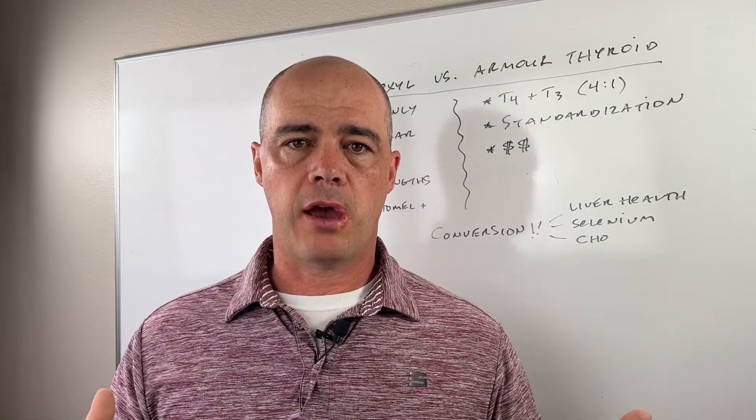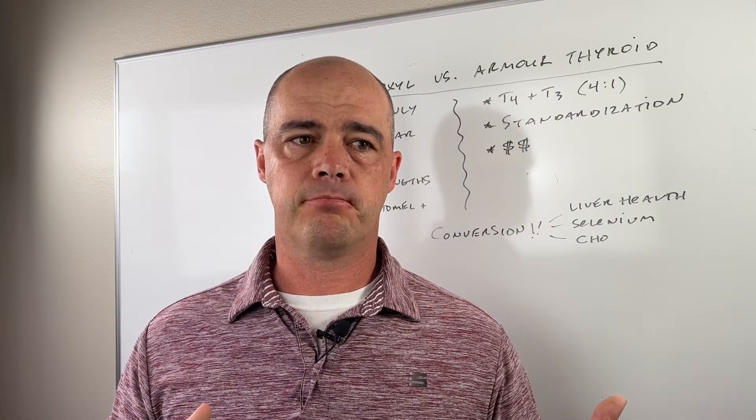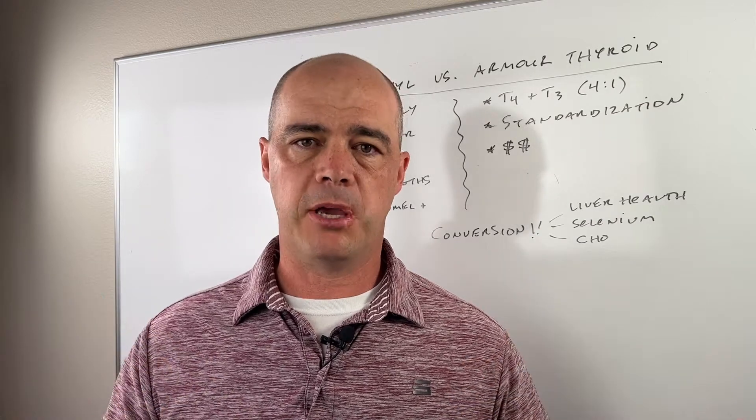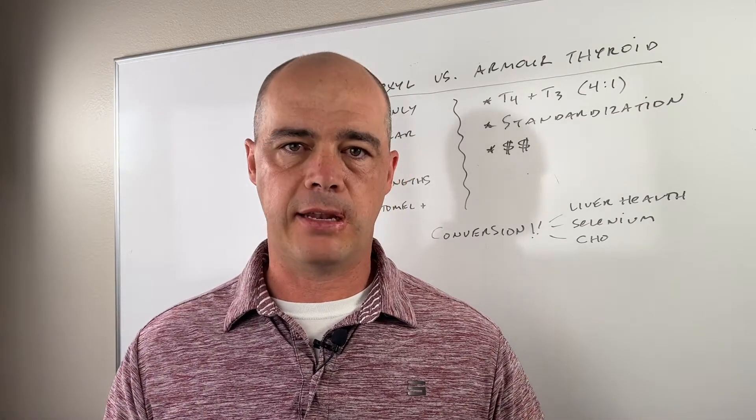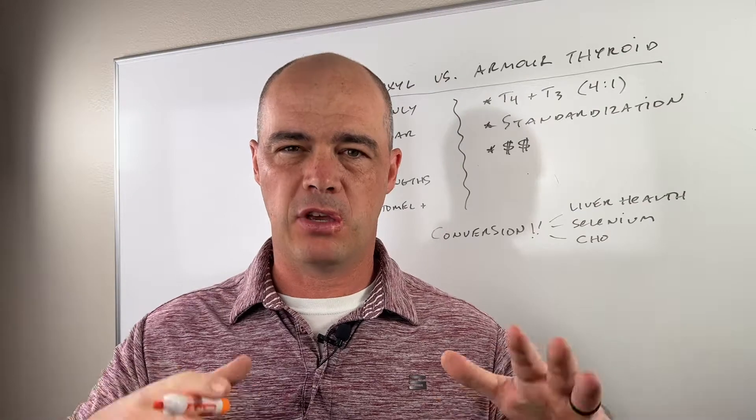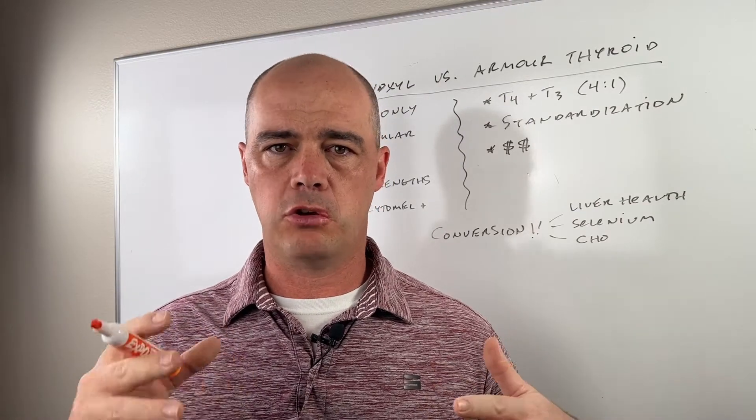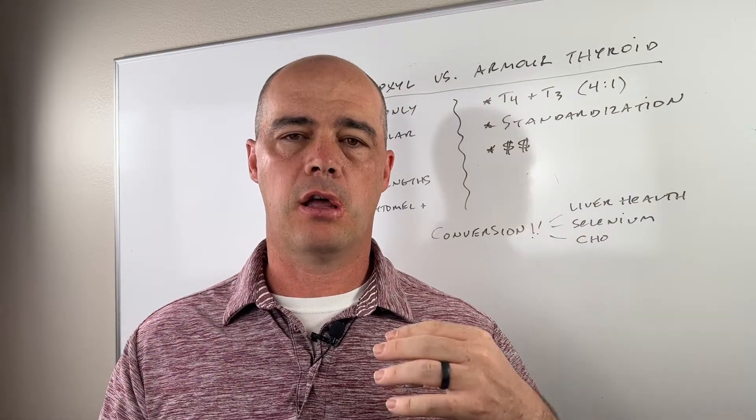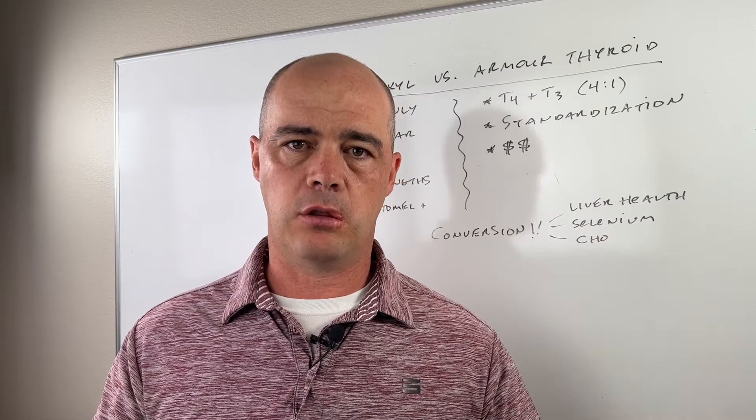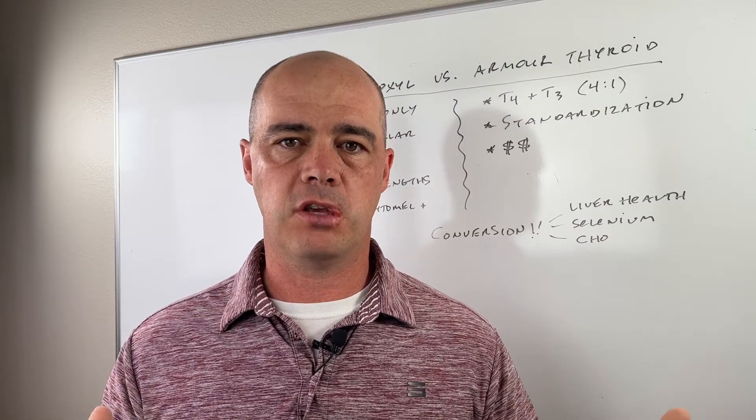When you have a low thyroid, your body makes thyroid hormones T4 and T3. Your body makes it in about an 11 to 1 ratio, T4 to T3. A lot of that T4 is converted to T3, which is the active form. Everything's great.